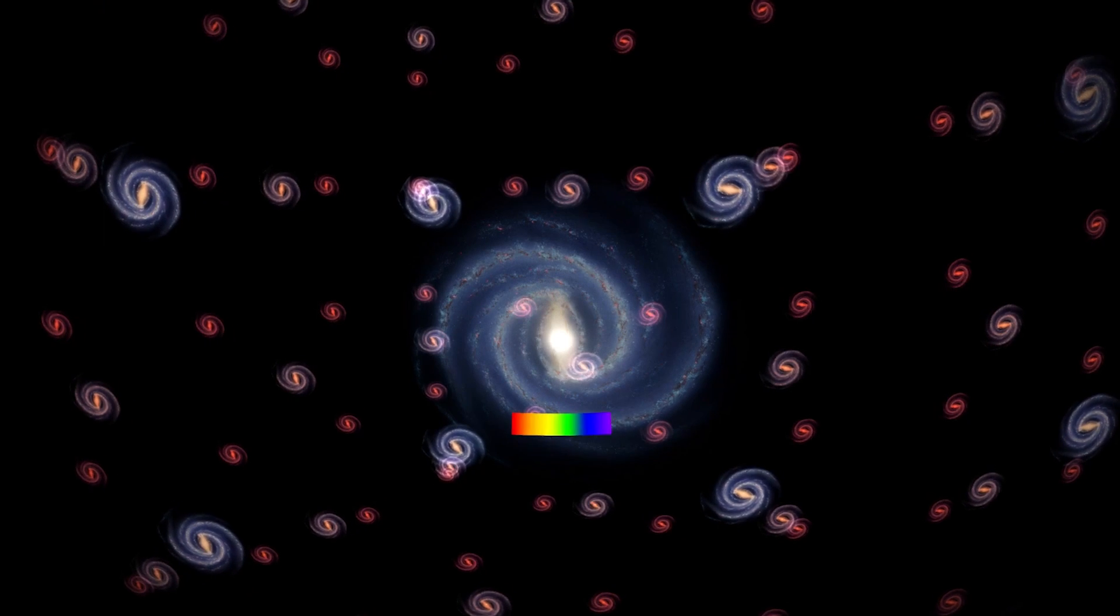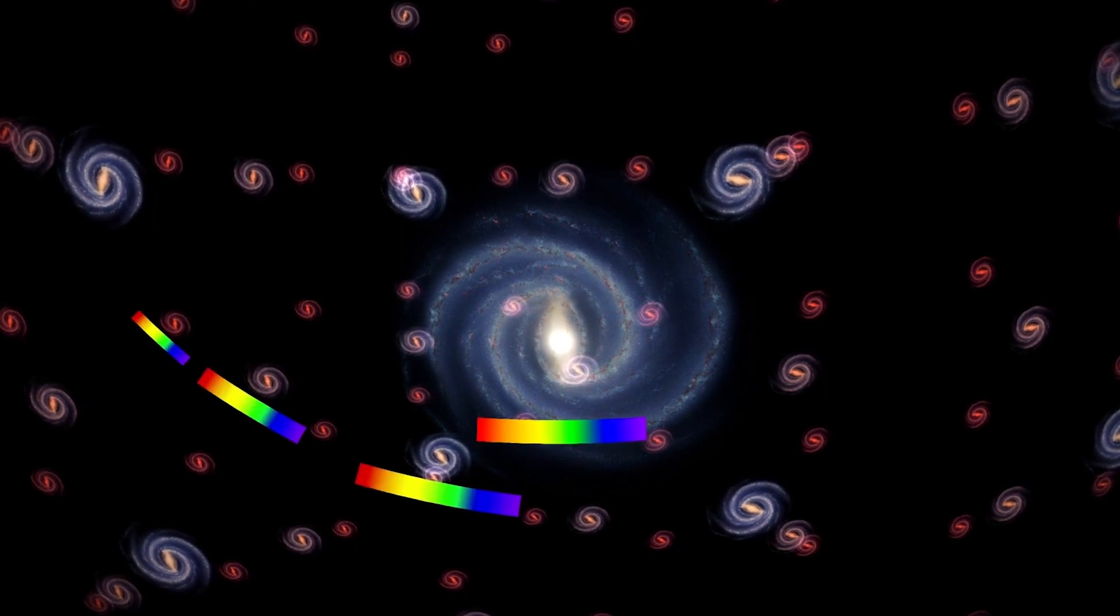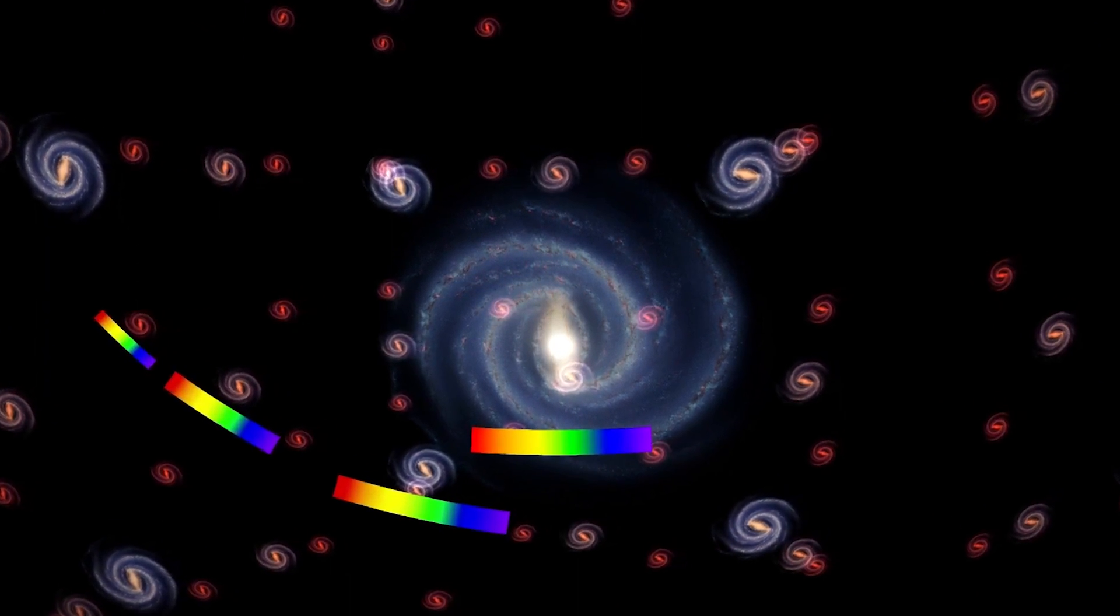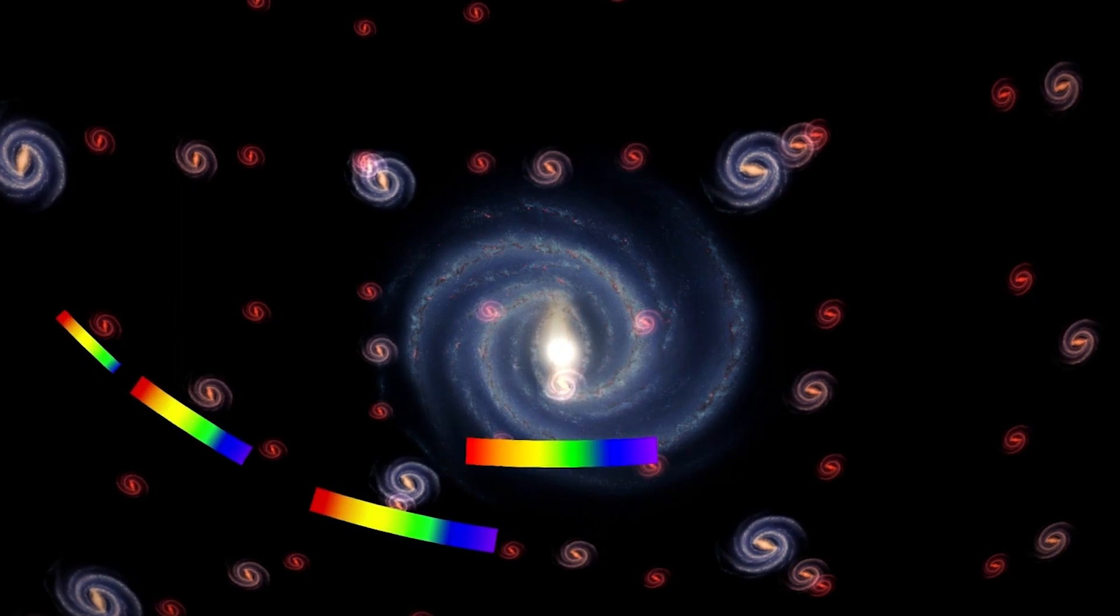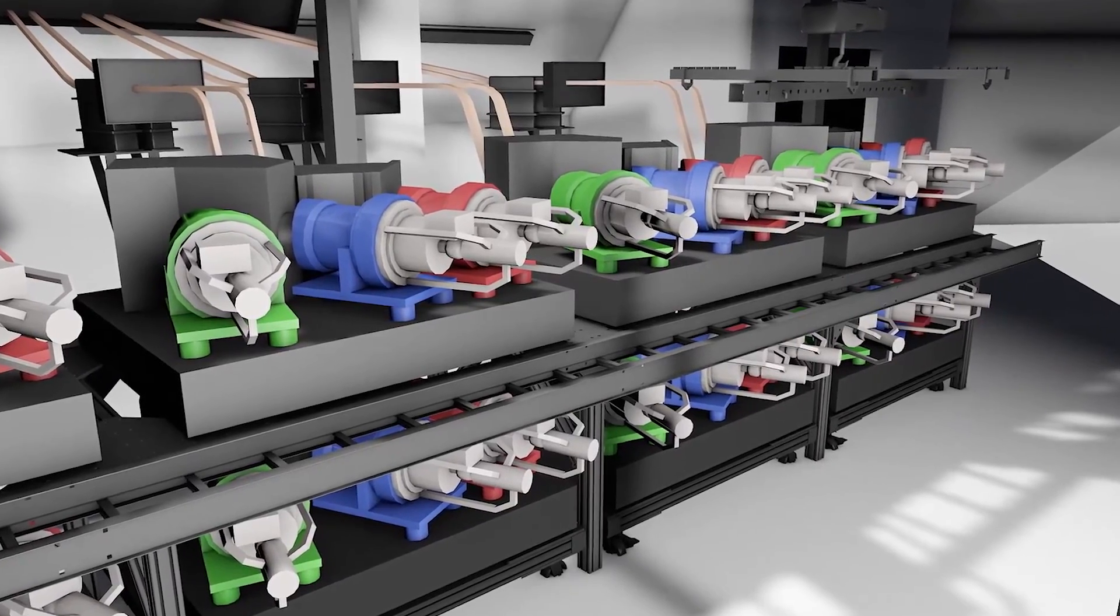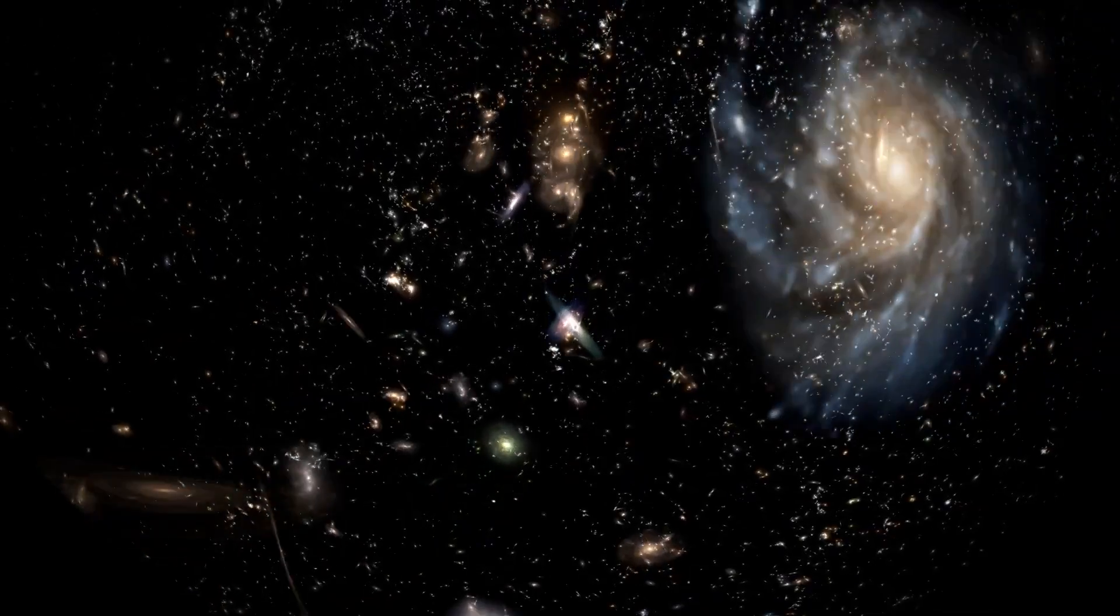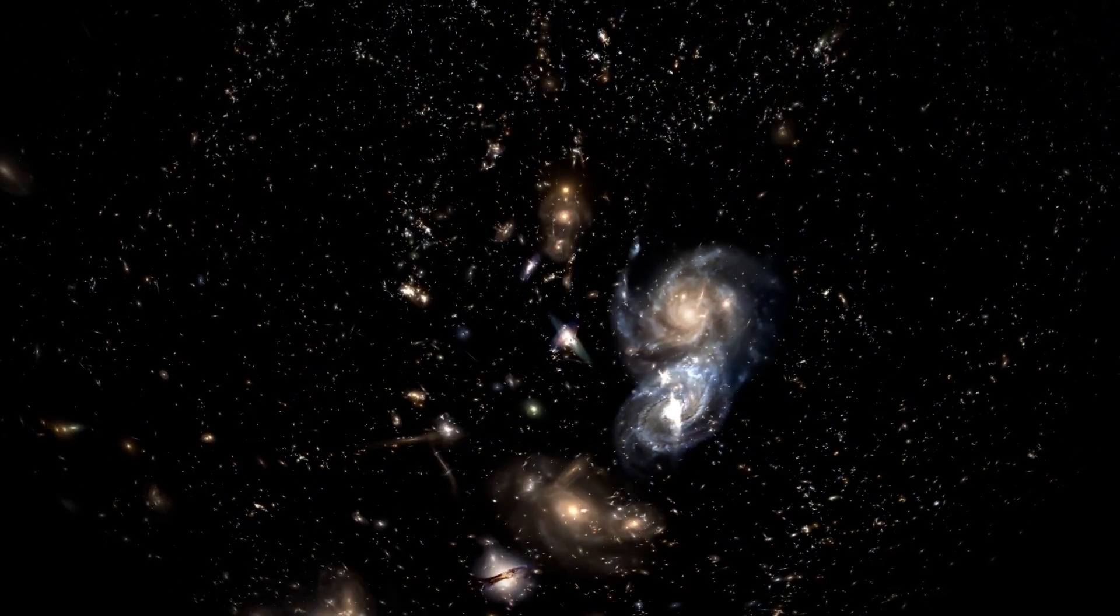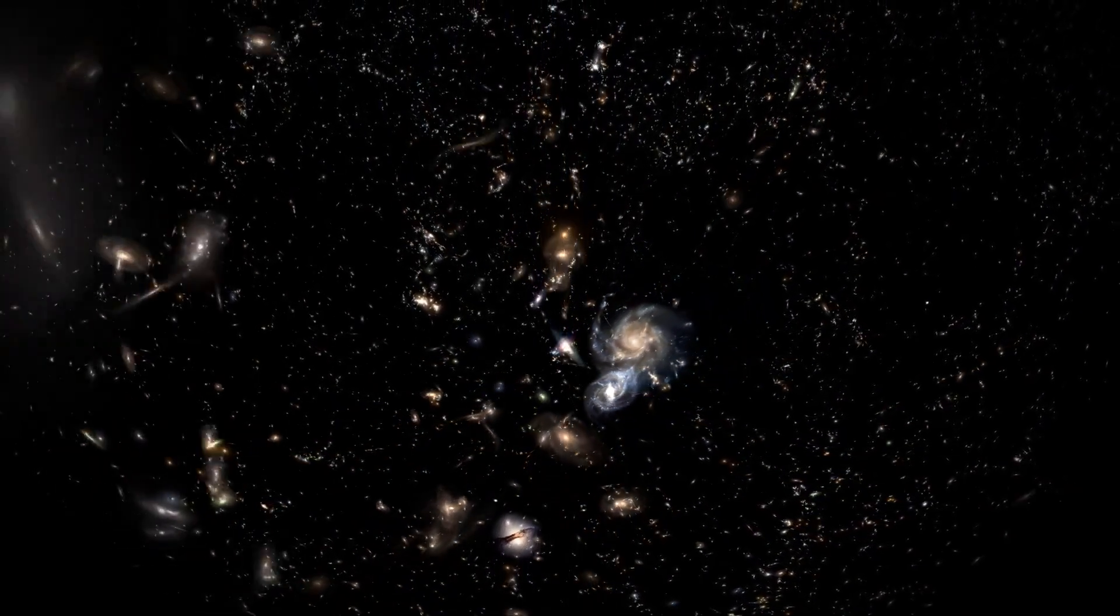These spectrographs scatter the captured light into its constituent colors, revealing the unique spectral signatures of each celestial object. Within these spectra, the cosmic history recorded in BAO becomes visible, like faint whispers from the depths of space and time.